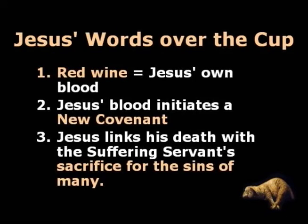Number three: Jesus links his death with the suffering servant's sacrifice for the sins of many. As mentioned in lesson two of this series, the phrase 'for many' points back to Isaiah 53:11-12, where the servant bore the sin of many. Jesus uses the phrase 'poured out for many for the forgiveness of sin.' To pour out blood in order to obtain forgiveness for another is clearly the concept of a blood sacrifice. In our day, some who are offended by this concept seek to reinterpret the meaning of the Lord's Supper. But it's pretty hard to hide the truth that Jesus intended it to remember his death as a sacrifice for sins.